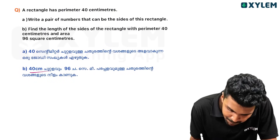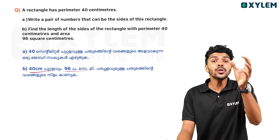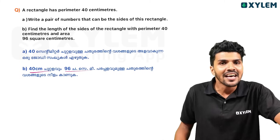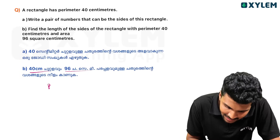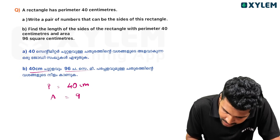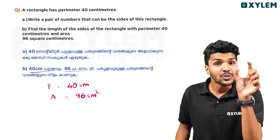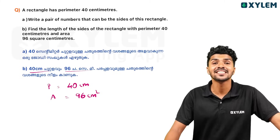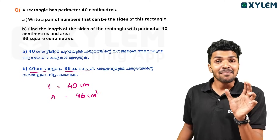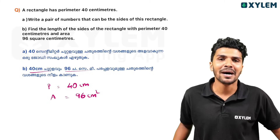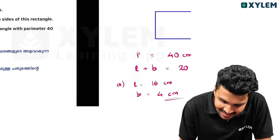Part B: the perimeter is still 40 cm. Now we are also given the area. Let's set up the question. It's simple, but requires careful steps. Let's get ready to solve it.